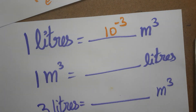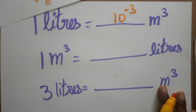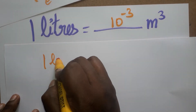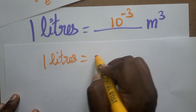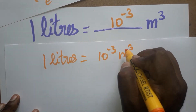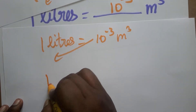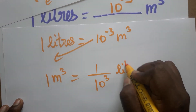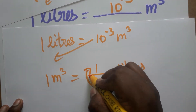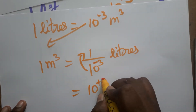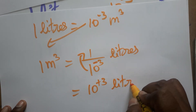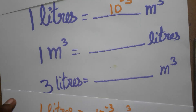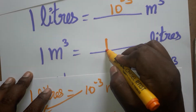Now the next question: one meter cube is equal to dash liters. Using the same result — one liter is equal to ten power minus three meter cube — bringing ten power minus three to the denominator: one meter cube is equal to one divided by ten power minus three liters. Since minus three moves to numerator it becomes plus three, so one meter cube is equal to ten power plus three liters.